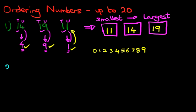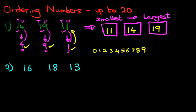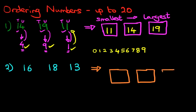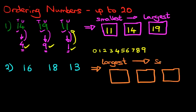Let's work through one more where we are going to find the largest and then work our way back to the smallest. Suppose we have these three numbers: we've got 16, 18, and 13. Let's put our boxes in — we're doing three numbers so we draw three boxes. The question is going to be that you have to write the numbers in order starting with the largest to the smallest.